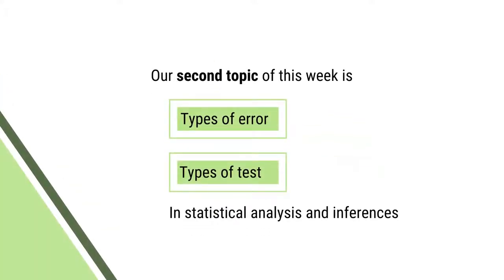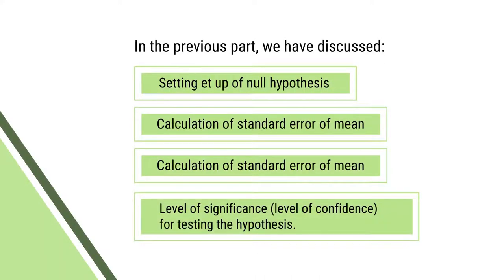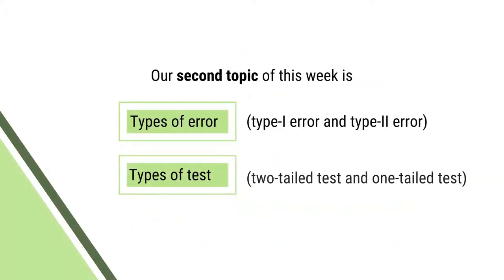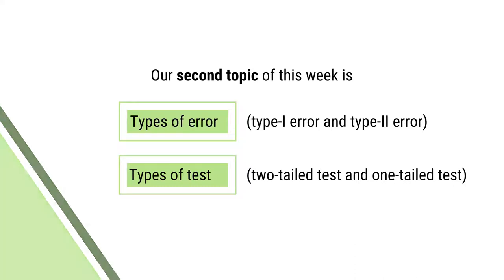Our second topic of this week is types of error and types of test in statistical analysis and inferences. In the previous part, we have already discussed in detail about the setup of null hypothesis, calculation of standard error of mean, level of significance, and level of confidence for testing the hypothesis. In this section, we will discuss about type 1 error and type 2 error, and one-tailed test and two-tailed test.